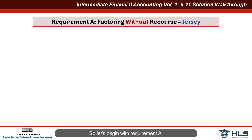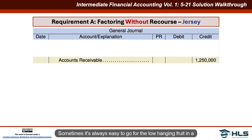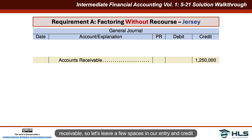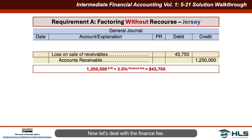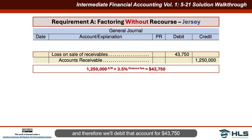Let's begin with requirement A: factoring without recourse for Jersey. It's easy to go for the low-hanging fruit in a journal entry first, and that's the accounts receivable. The company is selling $1,250,000 of accounts receivable, so we'll credit accounts receivable for $1,250,000. For the finance fee: $1,250,000 × 3.5% = $43,750, which is classified as a loss on the sale of receivables — we'll debit that account for $43,750.